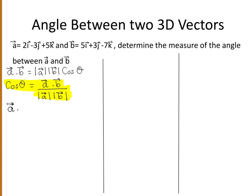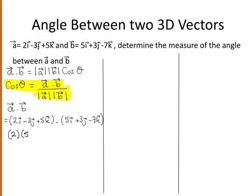So the dot product of vector a with vector b. We previously found the dot product of two two-dimensional vectors — it's very similar to find the dot product of two three-dimensional vectors. You must get the product of the i coefficients, so that's 2 by 5, added to the product of the j coefficients, and added to the product of the k coefficients.